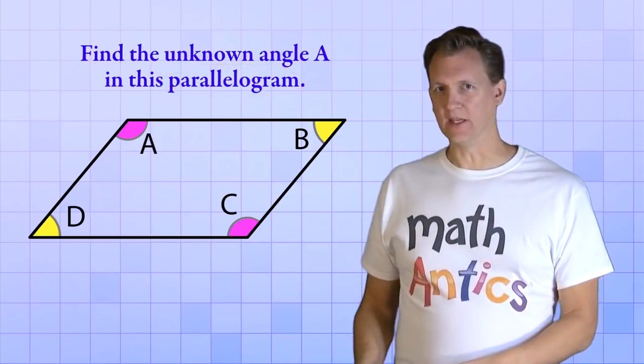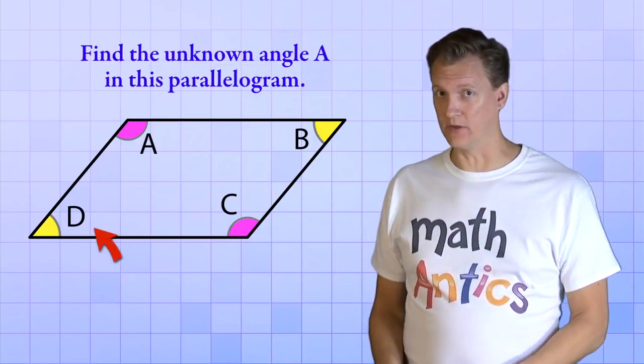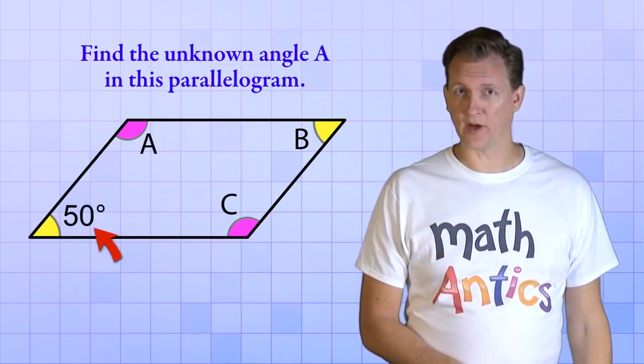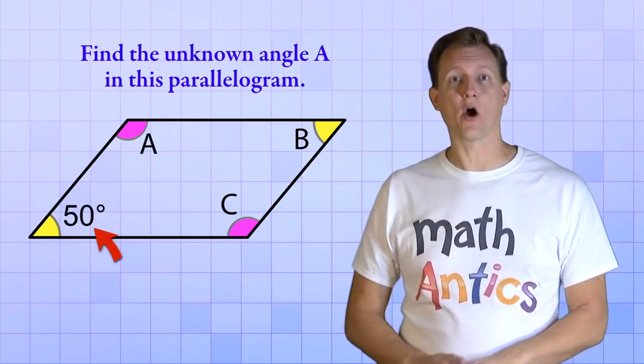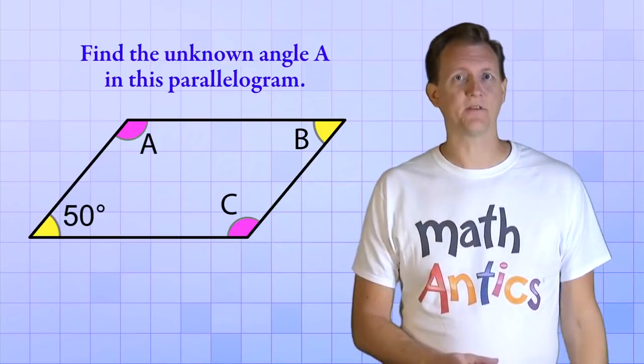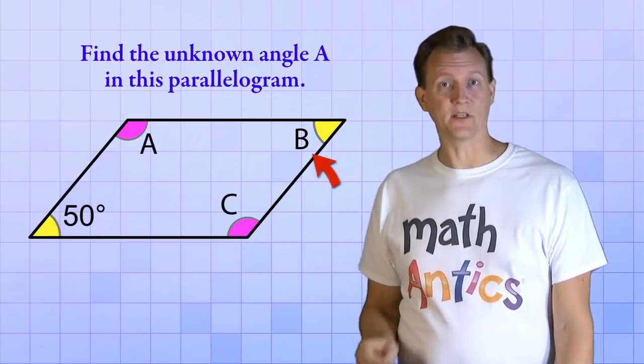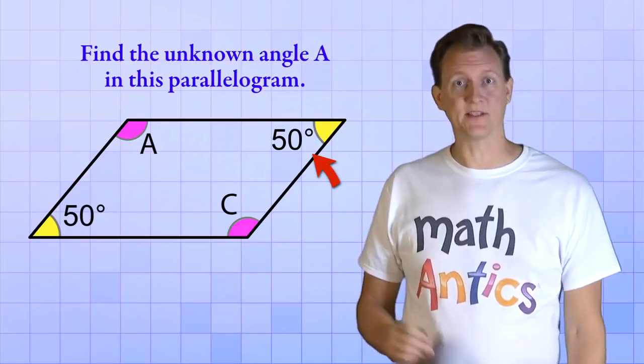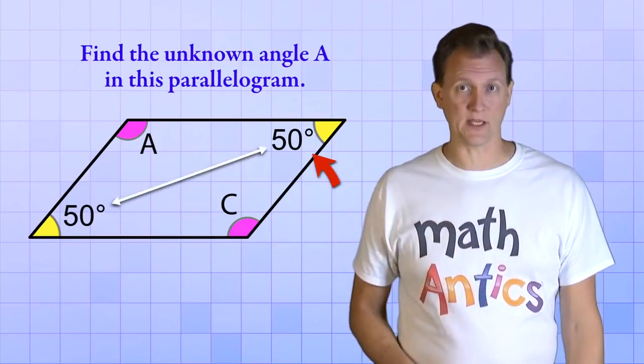So in our problem, even though we're only given the measure of one angle, since we know it's a parallelogram, that's all we need to figure out all the other angles. First of all, we know that angle B must also be 50 degrees, because these opposite angles must be equal.